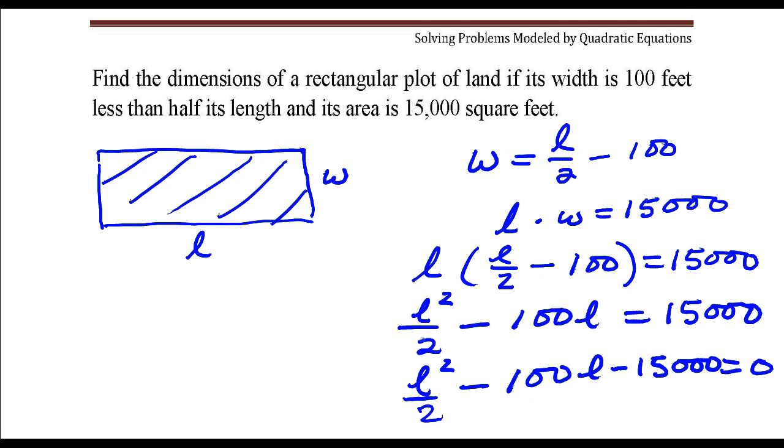And that will get rid of this fraction here. So if I multiply this first term by 2, that's going to give me an L squared. This by 2 would be minus 200L.